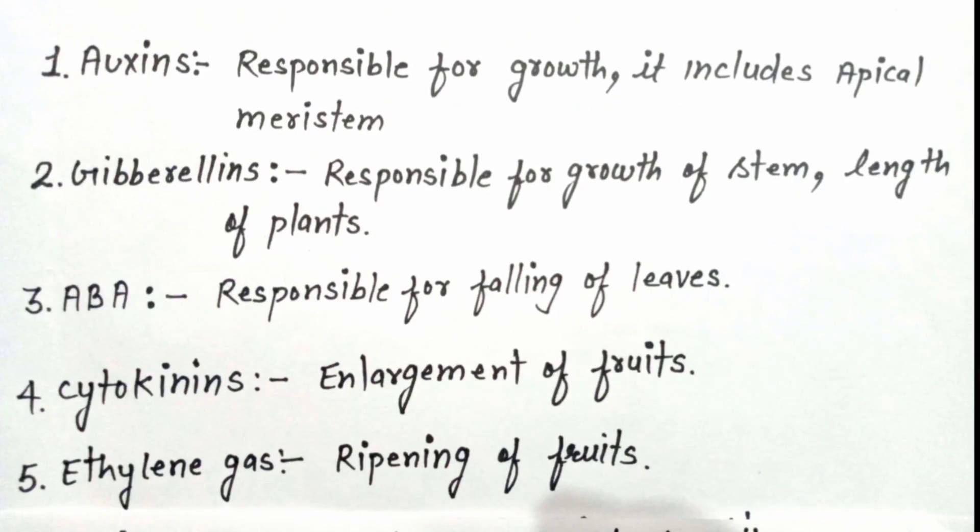Auxin hormone is responsible for the growth of the plant. It is also known as the apical growth hormone. It includes apical meristem, which means apical meristem is present in plants that have growth.